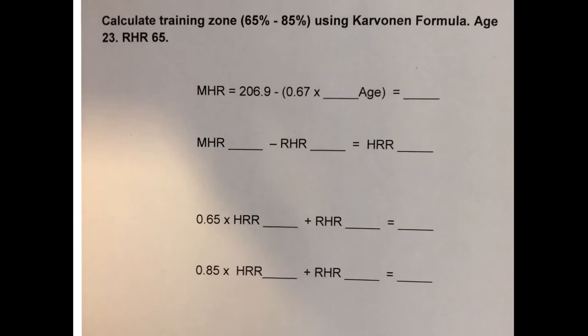Calculate the target heart rate for a client age 23 with a resting heart rate of 65 and they want to train between 65 and 85%. We use the Karvonen formula.